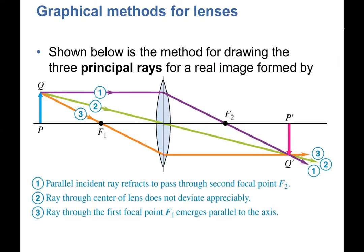To summarize the graphical method: Ray 1 (P-ray) goes parallel to the axis then through the focal point on the other side. Ray 2 (V-ray) goes through the vertex without changing direction. Ray 3 goes through focal point F1 and then emerges parallel. Where they converge is Q prime — the tip of the image at P prime.